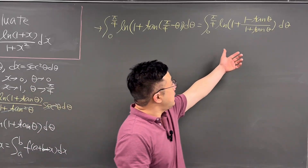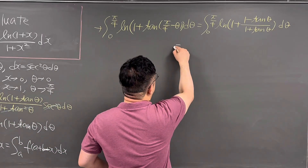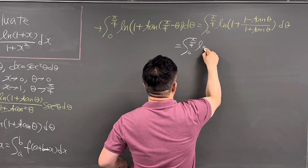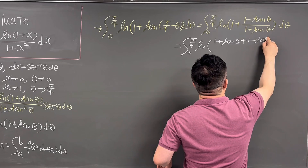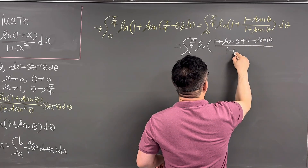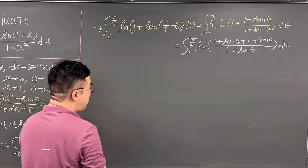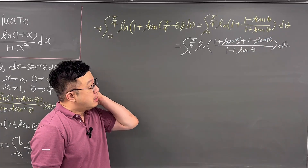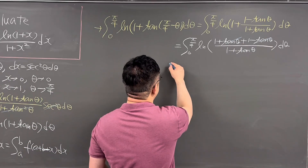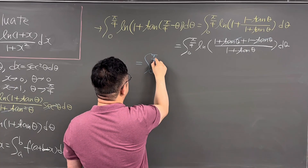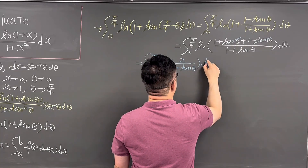Let's work on the inside part of the ln. If you add 1 and the fraction 1 minus tangent theta over 1 plus tangent theta, you get 1 plus tangent theta plus 1 minus tangent theta, all over the denominator 1 plus tangent theta. The tangent theta terms on the numerator cancel, leaving 2 over 1 plus tangent theta. So what we have is the integral from 0 to pi over 4 of ln of 2 over 1 plus tangent theta, d theta.